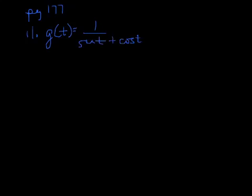Page 177, number 11. We have g(t) = 1 over sine t plus cosine t. Alright, so you have two choices right now.